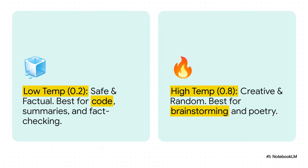But here's the good news — you have some control over this. Many AI models have a temperature setting, which is basically a creativity dial. If you turn the temperature down low, you get more focused, factual, predictable answers. Turn the temperature up high, and you're encouraging more creative, diverse, and sometimes really unexpected results. It's a fun one to play with.